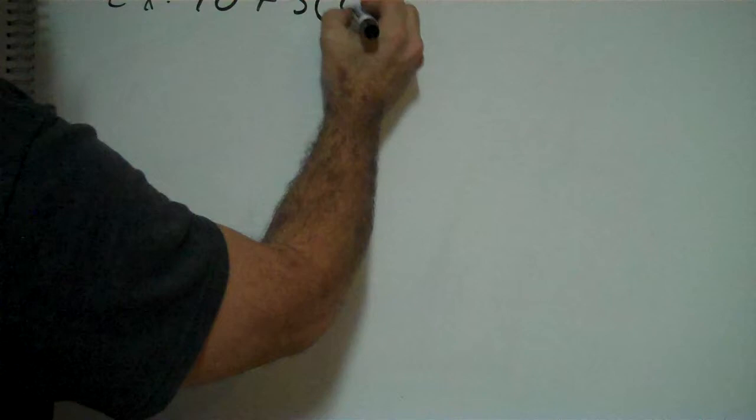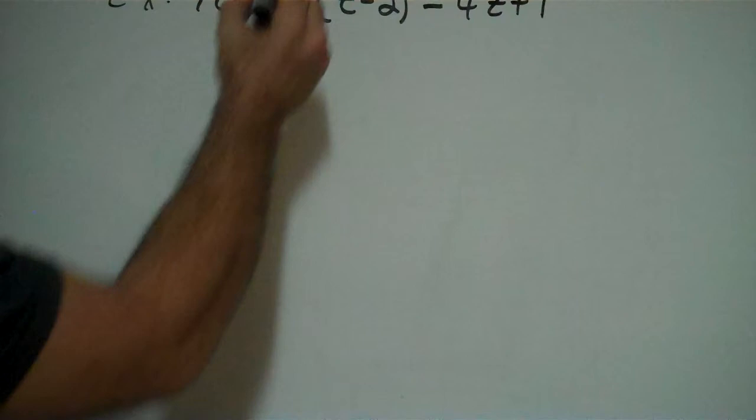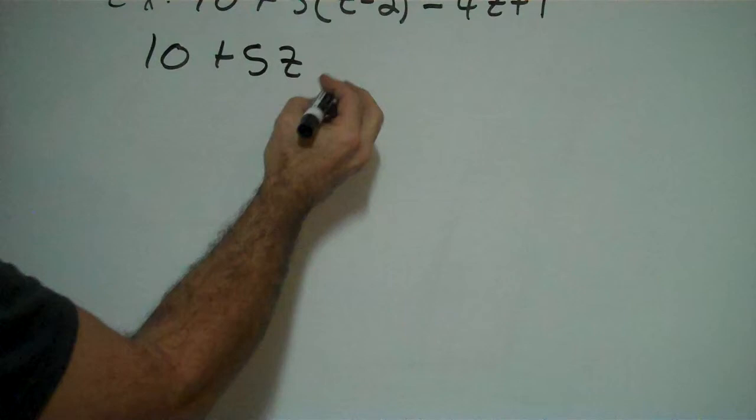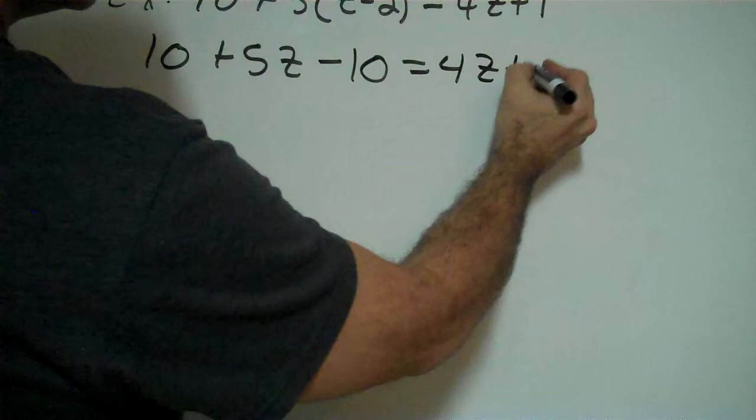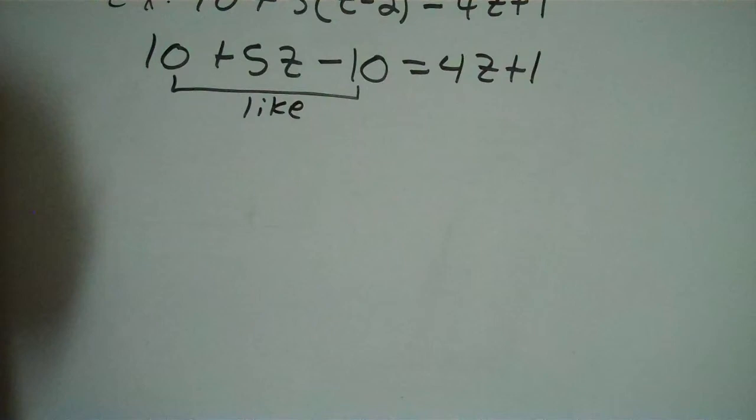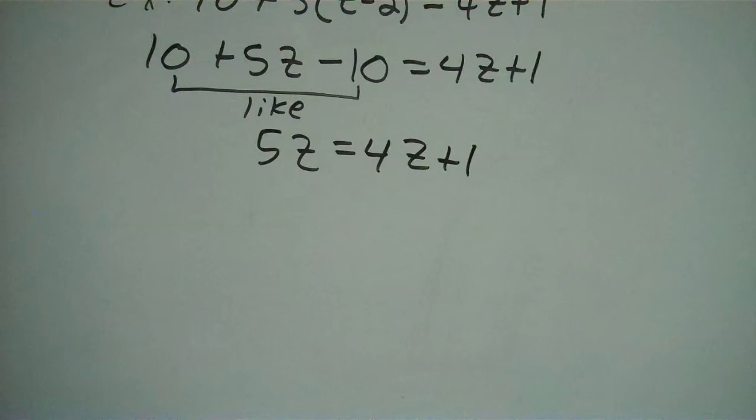Alright, so I've got time for one more of these. So I'm going to do 10 plus 5 parentheses z minus 2 equal to 4z plus 1. So first thing I've got to do is get rid of these parentheses by distributing. So I bring down that 10 plus 5 times z is 5z and then 5 times negative 2 is negative 10. That's still equal to my 4z plus 1. Now since I've got three things over here, I'm going to combine like terms. Well, these numbers are like terms. 10 and negative 10, they add and give me 0, so they cancel.